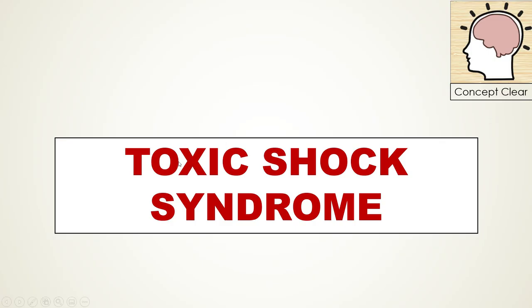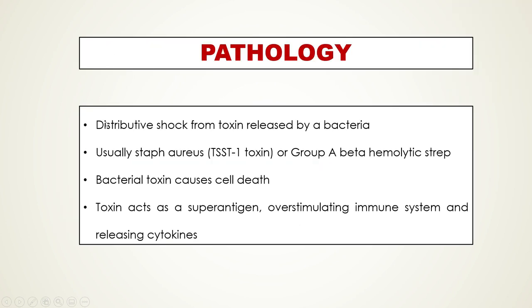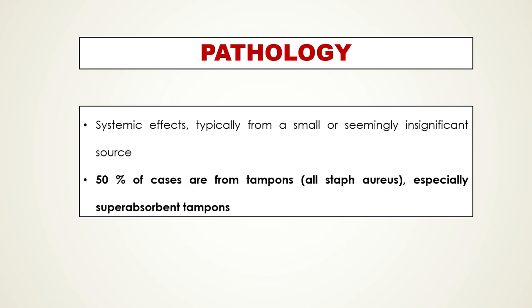In this lecture we are going to discuss toxic shock syndrome. Toxic shock is a distributive shock caused by an endotoxin released by bacteria, most commonly staph aureus, which releases the toxin TSST-1. The bacterial toxin causes cell death and acts as a super antigen, overstimulating the immune system and causing a release of cytokines that leads to vascular distributional problems such as dilatation and increased leakiness.